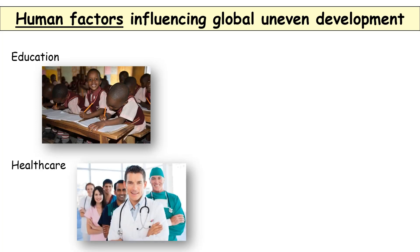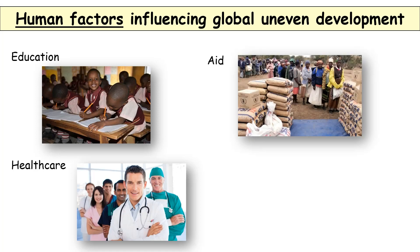Another human factor is healthcare. Ill people can't work, so in a country where there's a lot of illness, less tax is paid to the government, giving it less money to develop the country. A third factor is aid. A country experiencing lots of aid from other countries — such as building schools or improving water supplies — will develop quicker, whereas a country receiving less aid will not have that advantage.